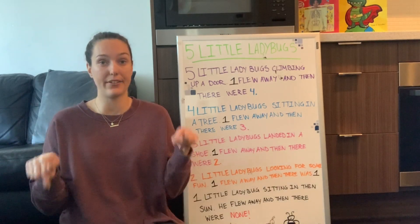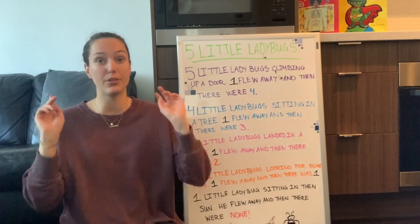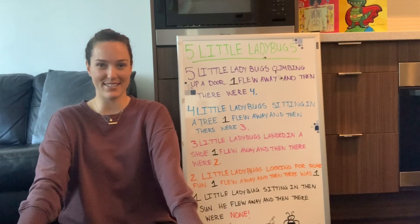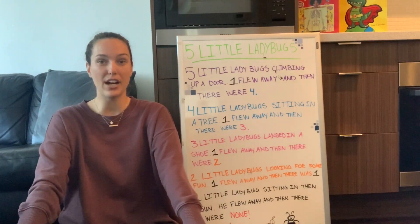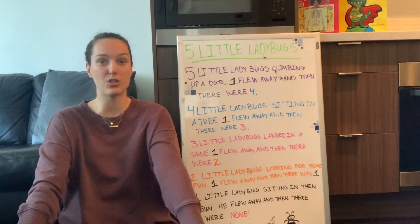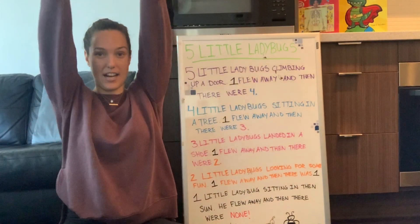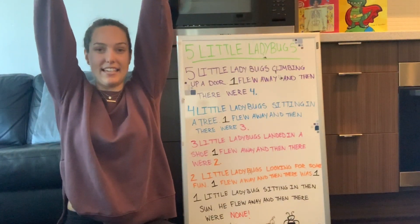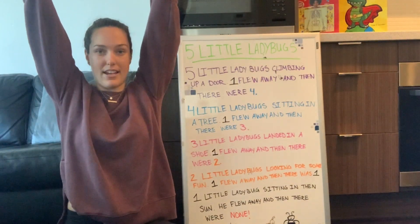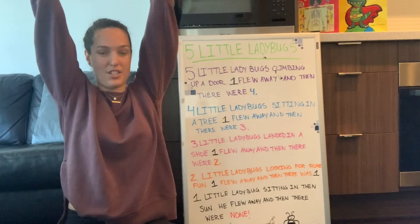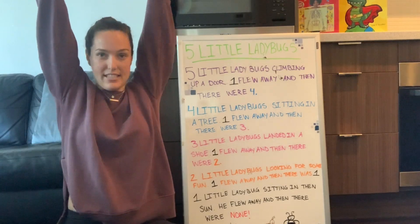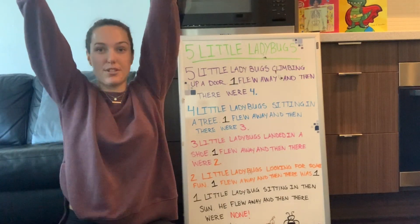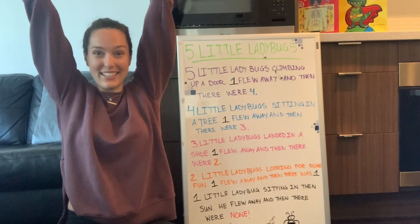You can do this sitting down like me or you can stand up if you'd like. For the first one, we are going to stretch our arms up to the sky — reach as high as you can and give your back and arms a nice stretch. Say: good morning, good afternoon, good evening!